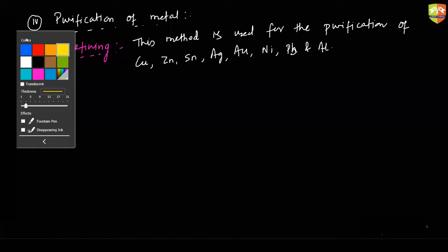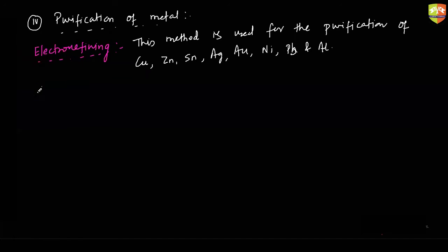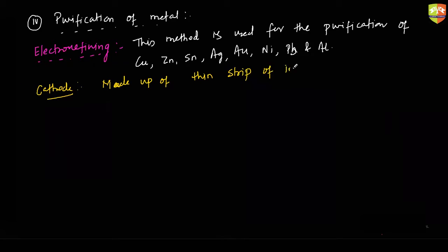We have a cathode and an anode. The cathode is made up of a thin strip of impure metal — the metal which is to be refined. So we take the impure metal of that particular metal as the cathode.